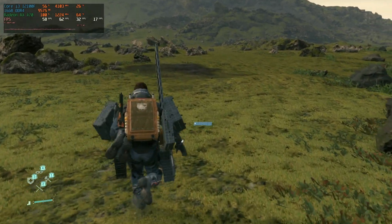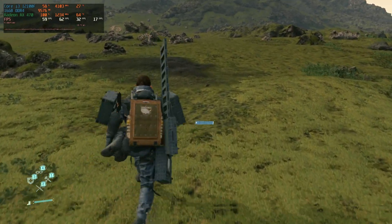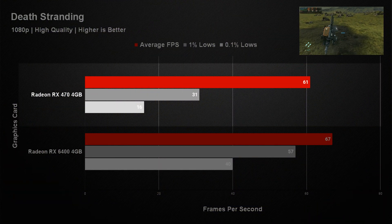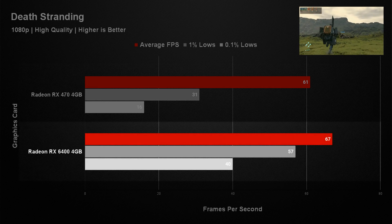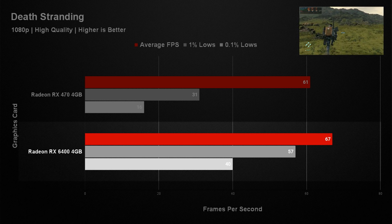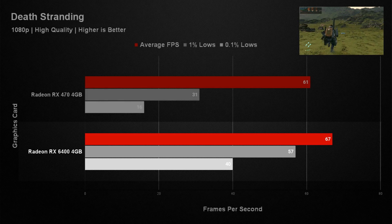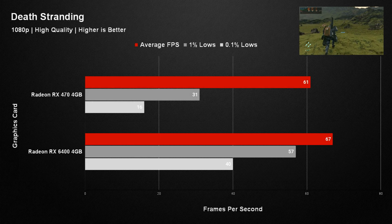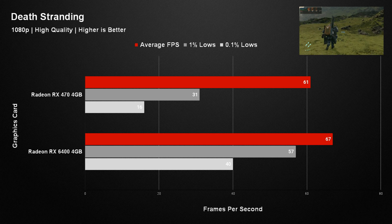In Death Stranding, both cards again came pretty close, with the RX 470 getting an average of 61 frames per second and the RX 6400 pulling away with 67. But there was a totally different story when it came to the 1% lows, where the RX 6400 managed a much better result, providing a much smoother gameplay experience and demonstrating how the more modern RDNA 2 architecture is working.